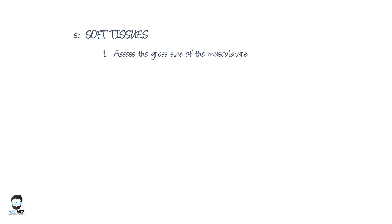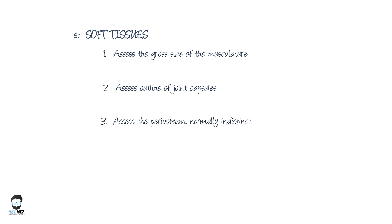For soft tissues, assess the gross size of the musculature, the outline of joint capsules, and the periosteum. Also carefully check for any gas shadows, which could indicate an open fracture.